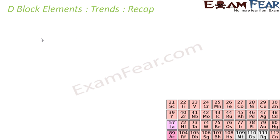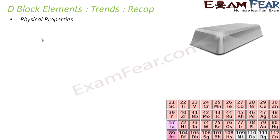Let's review what we have studied about the D-block element properties. The first is the physical properties. All these are metals. They have high tensile strength — exception mercury. They are ductile, they are malleable, they have high thermal and electrical conductivity, they have high metallic lustre, they are all shiny, and they have high melting and boiling points.